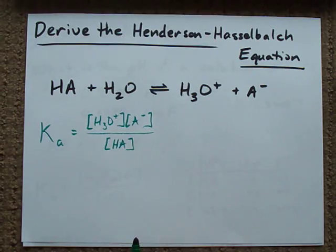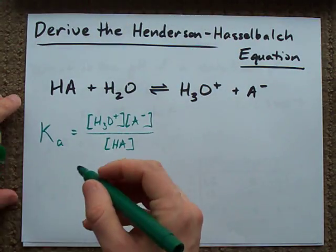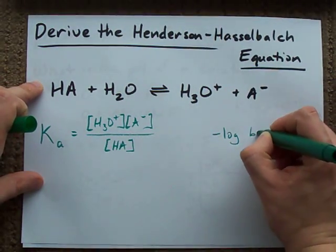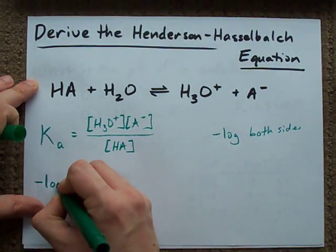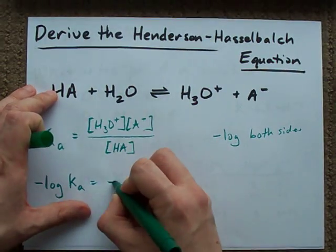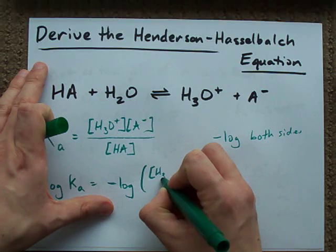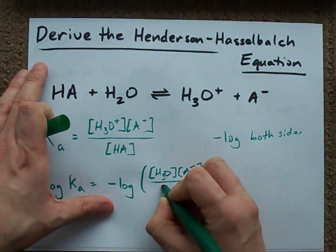Now, here's what you do to find or derive the Henderson-Hasselbalch equation. The first thing I want you to do is take the negative log of both sides. So, negative log of Ka on this side, negative log of this monstrosity on the other side: H3O+ times A- over HA.